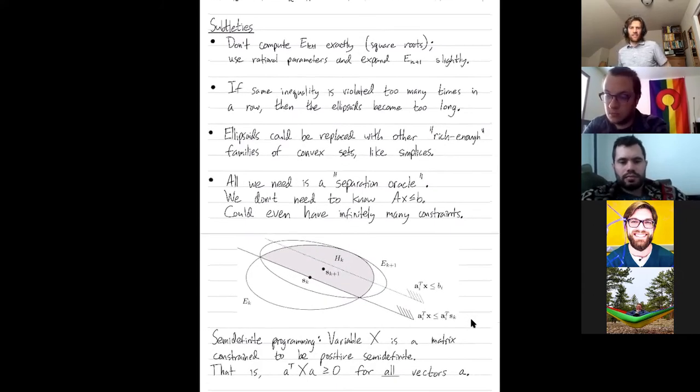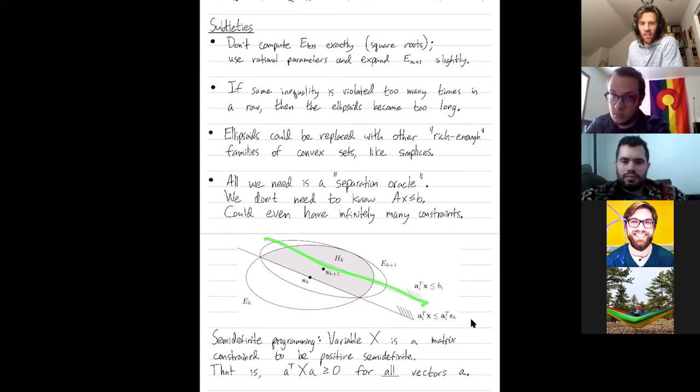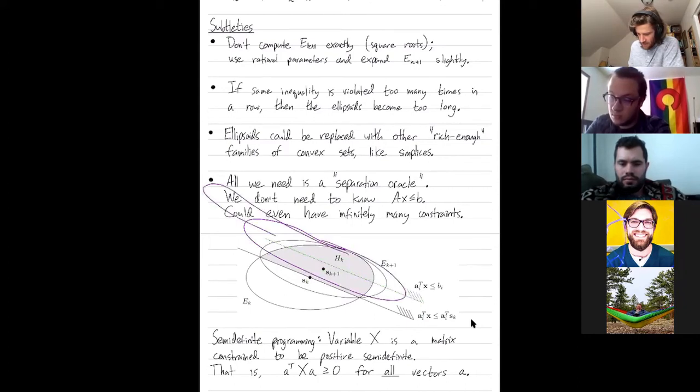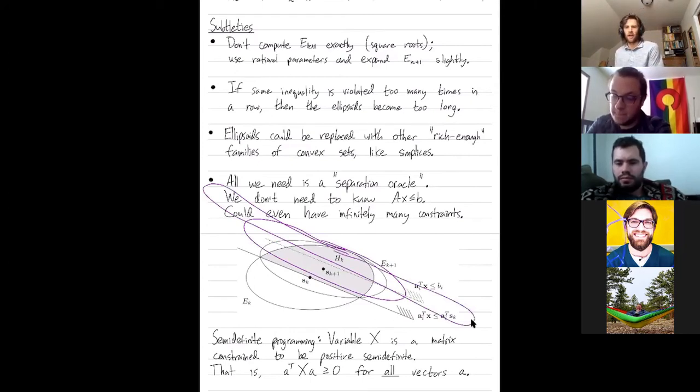Another subtlety, and I don't fully know why this is a problem, but I can make guesses. Let's say this same constraint is the constraint that we keep using to separate our current center from the feasible region over and over again. If we keep using this constraint, then our ellipses start to get narrower and narrower. And this can also cause problems. I'm not exactly sure why, but I could imagine for reasons of numerical stability.